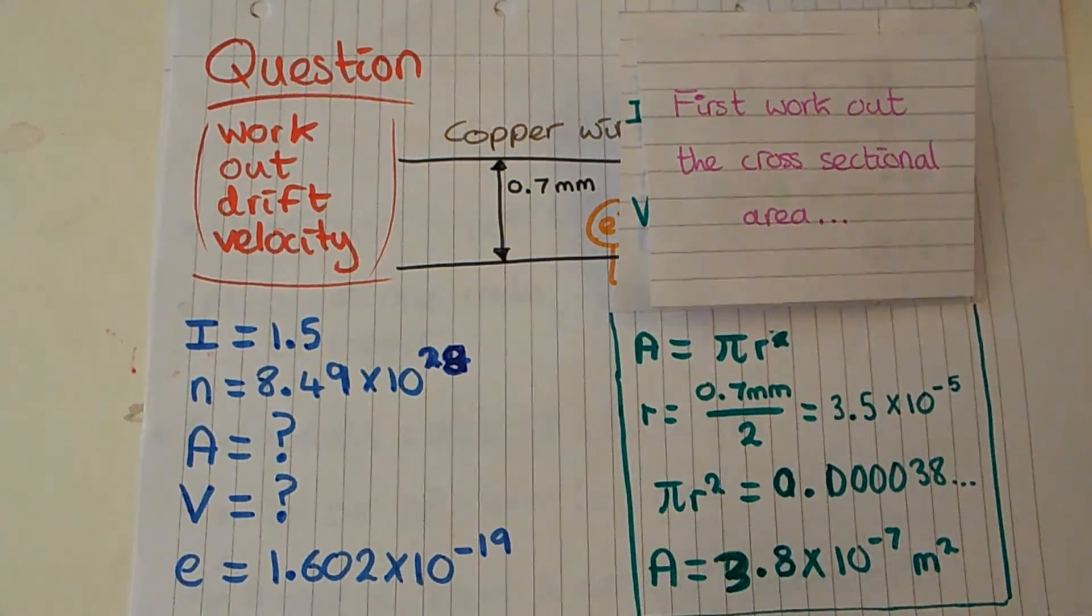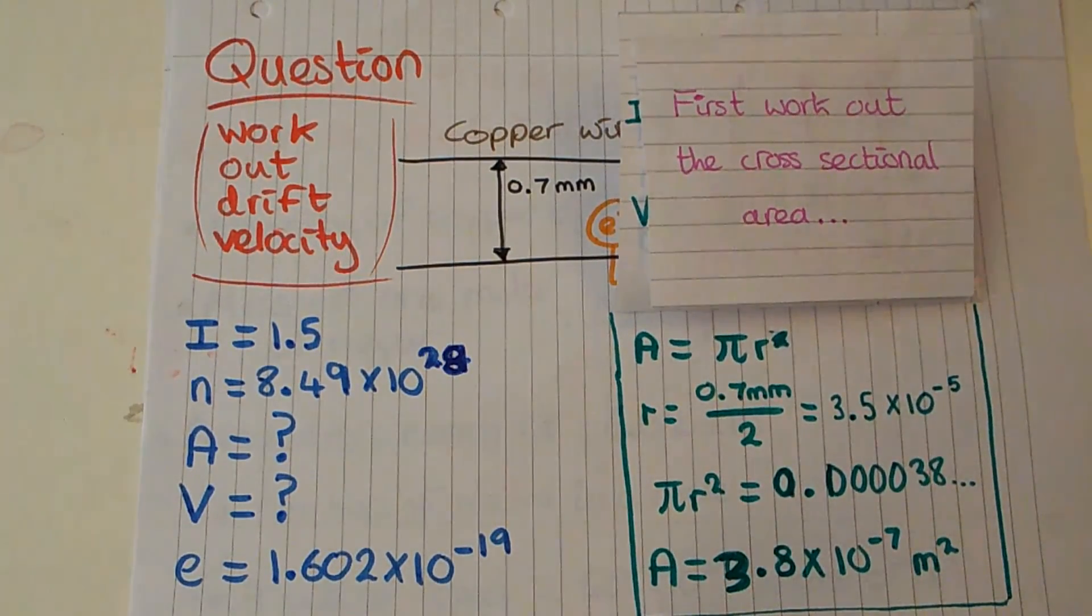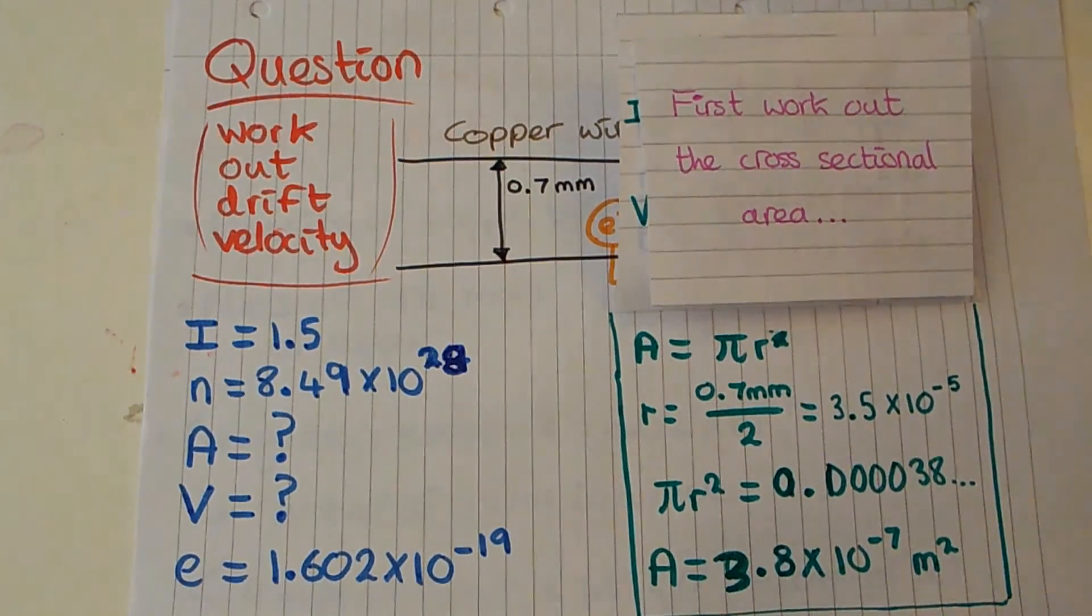So our radius is going to be 0.7 millimeters over 2. We want to translate this into meters because we want all of the units to be standard scientific units - we want all length to be in meters for the purpose of this calculation.